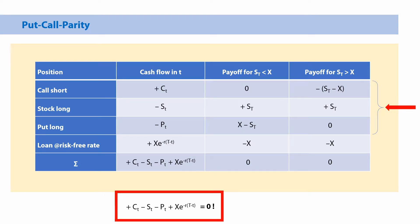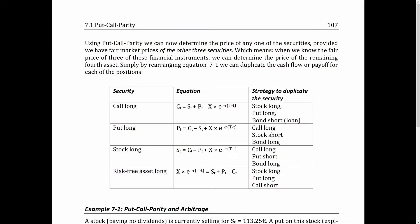This is actually the put-call parity. It says that we can arrange a portfolio so that those four instruments, under the assumptions we made, have no value whatsoever. The consequence is: if we have the fair market prices of three of these securities, we can determine the price of the fourth. Using put-call parity, we can determine the price of any one of these securities provided we have fair market prices of the other three, and simply by rearranging the equation we can replicate the cash flows or payoffs for each of those positions.